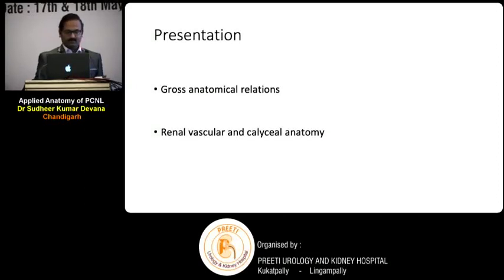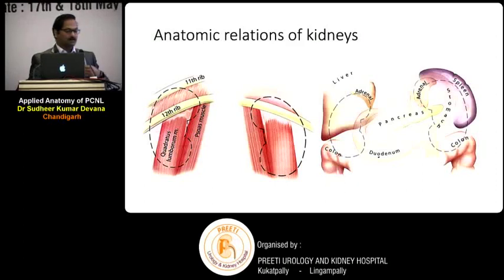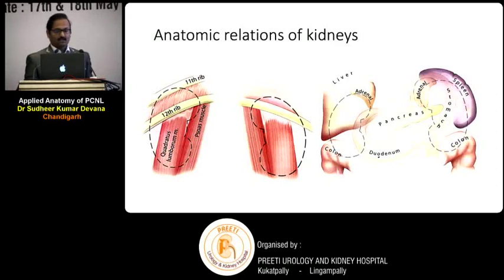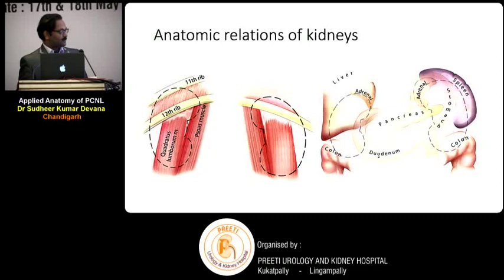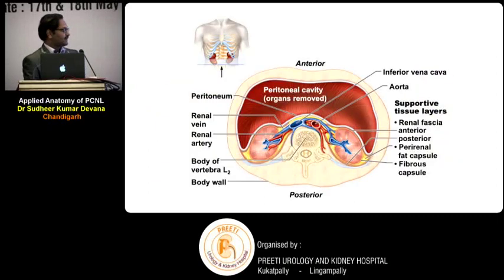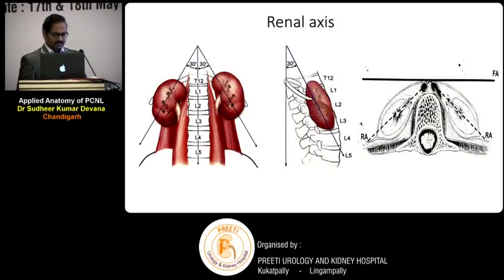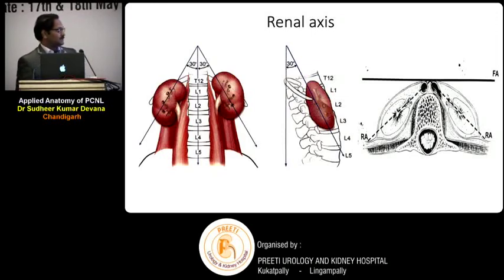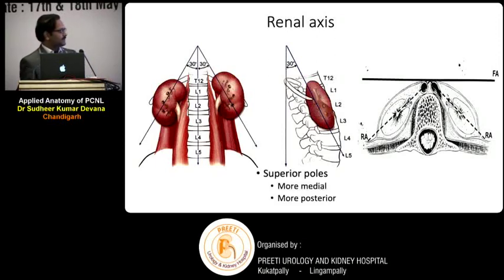These are my disclosures; some of the photographs I have taken from standard books. I will be covering first the gross anatomical relations of the kidney and then the renal vascular and calyceal anatomy. Every one of you has the basic anatomy related to the kidney. Kidneys are retroperitoneal organs where the majority of organs lie more anteriorly, and a significant area behind the kidney is free for doing PCNL. This renal axis is very important, particularly for persons doing PCNL, because the upper poles are slightly more medial when compared to the lower poles.